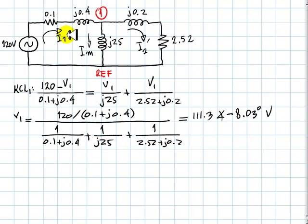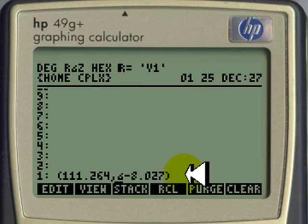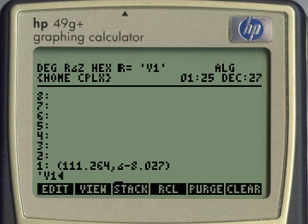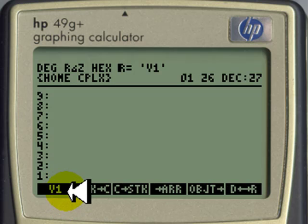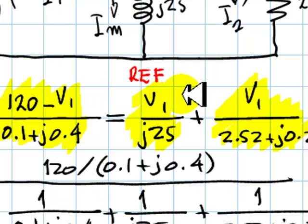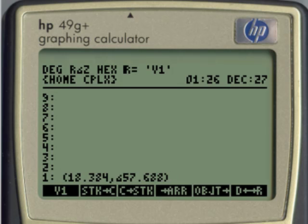Now to find each one of the currents I1, Im, and I2 prime, I have them here. And now that I know already what is V1, I just substitute them in these expressions to obtain I1, Im, and I2 prime. But because we are exercising with the calculator, let's do the computations. The first thing I'm going to do is store this value in a variable. I will call it V1. Alpha, V1, enter, store. It's been stored.